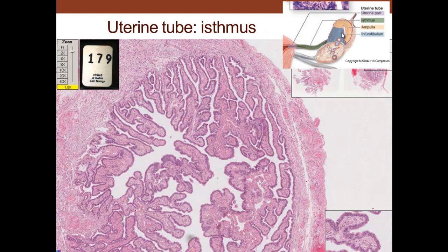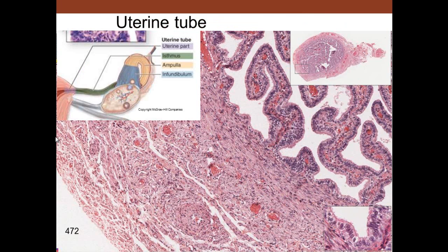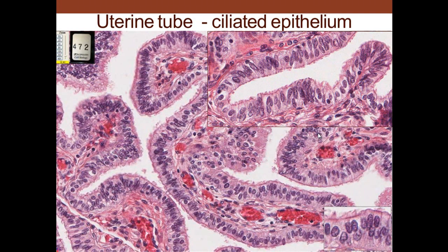As you go from the ampulla toward the uterus, you reach the isthmus. The wall becomes a little thicker, becoming more similar to the uterus, and the projections are getting smaller with a more prominent muscle layer. We still have ciliated cells on the surface, blood vessels, and lymphatics. There are also secretory cells present as well.